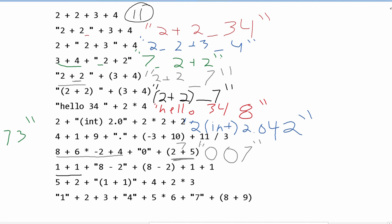Next, for this one, we are adding these two together, so this is going to be 2. Then we have quotes, and then this is going to be a combination since a string is next. So we're going to have 2, and since there's no space, then 8 minus 2. Since these are in parentheses, we have to add them together: 8 minus 2 is 6. So this is going to be 26. And then we have 1, 1, and these plus signs are just combining them together, not adding.